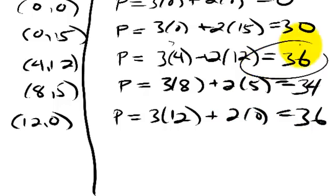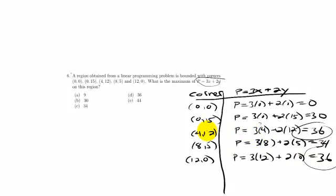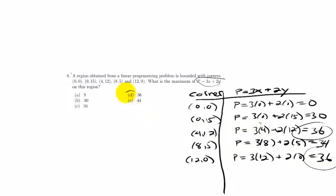So, thirty-six. That is our biggest value. Now, it so happens it occurs at both corners. So, that's not a big deal. Our answer's still D.